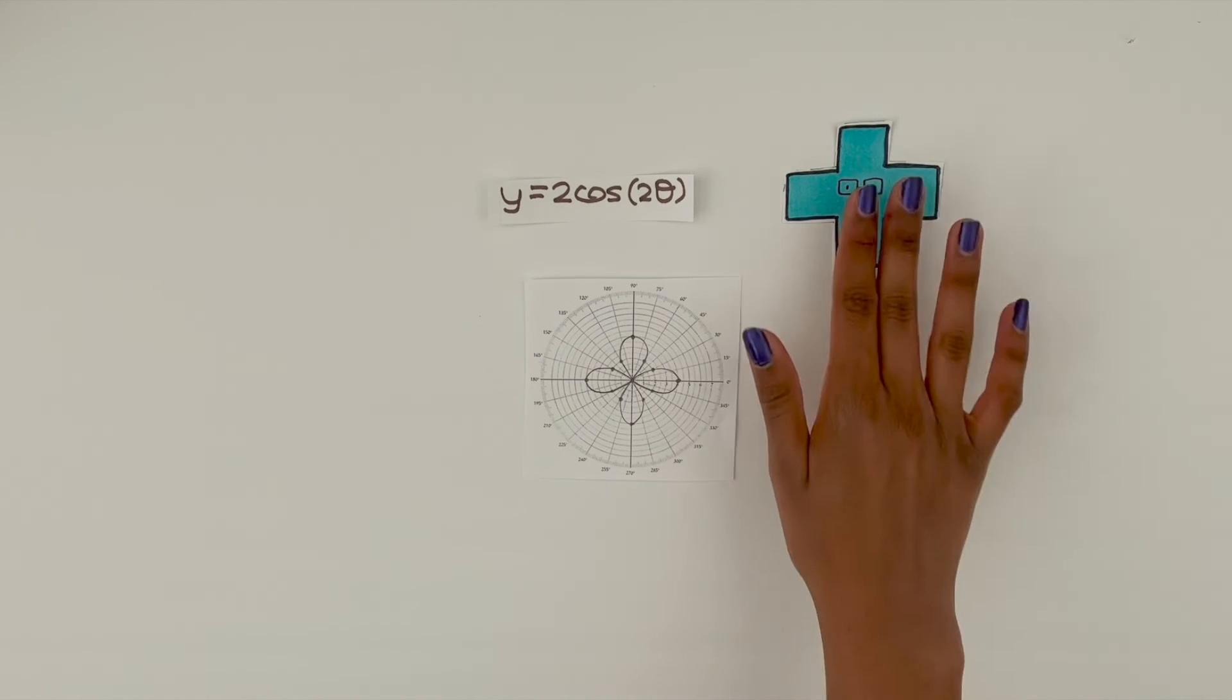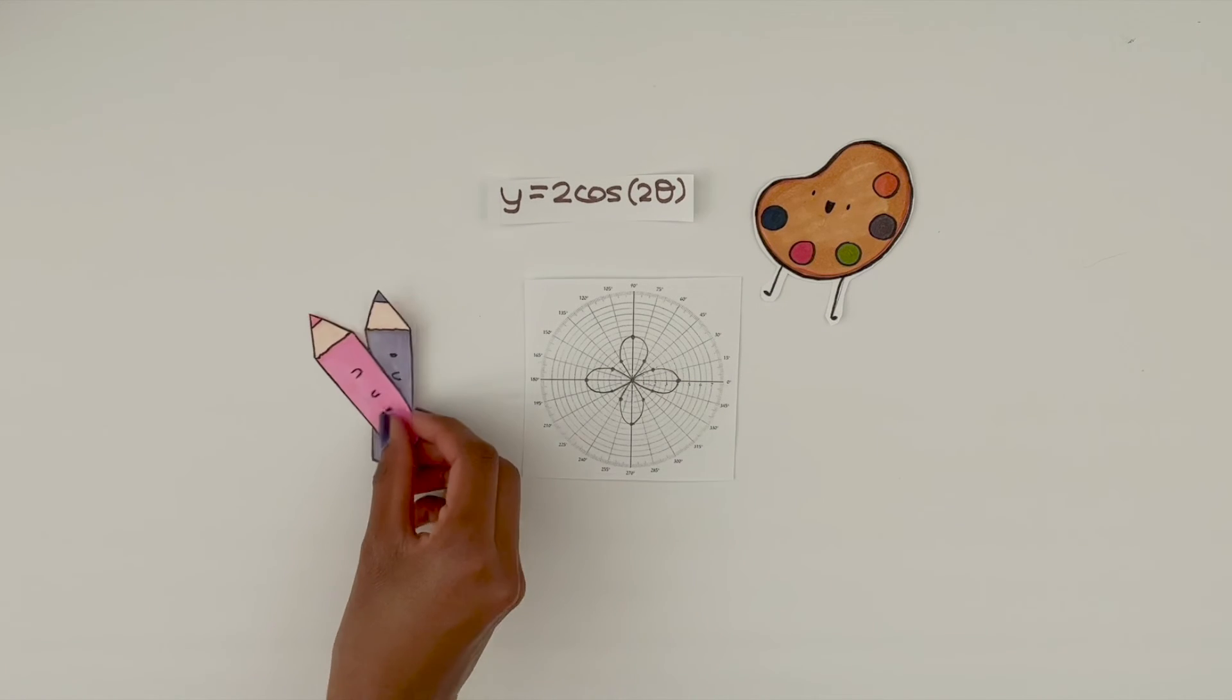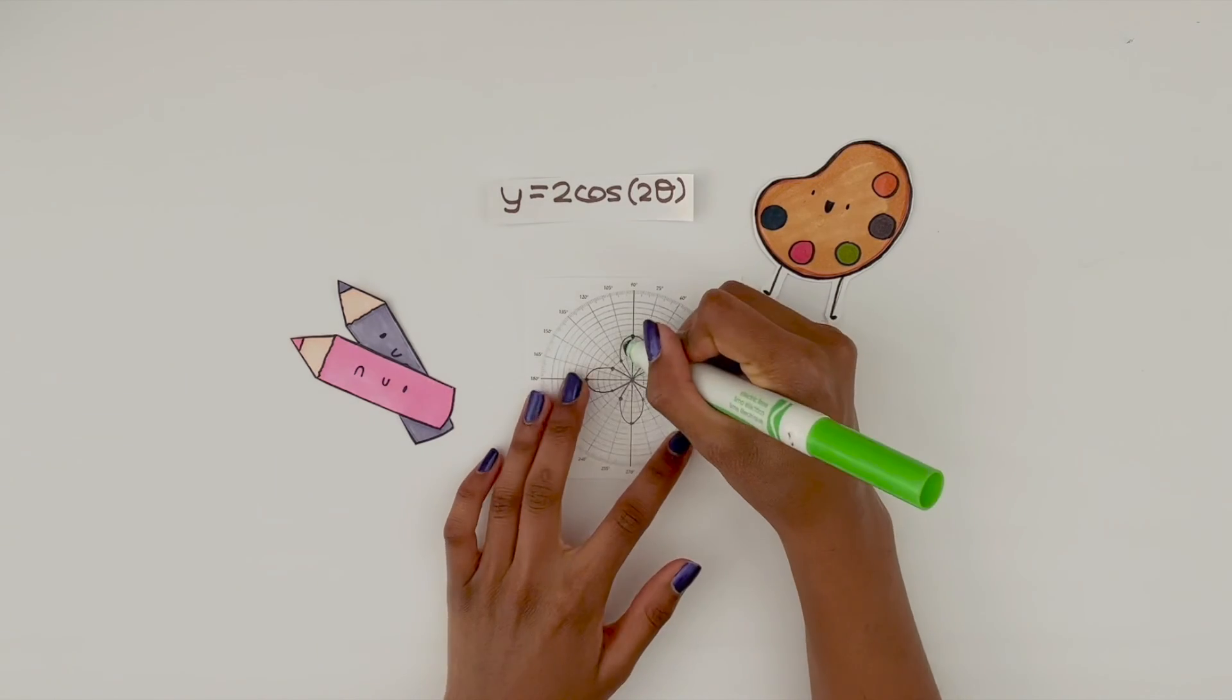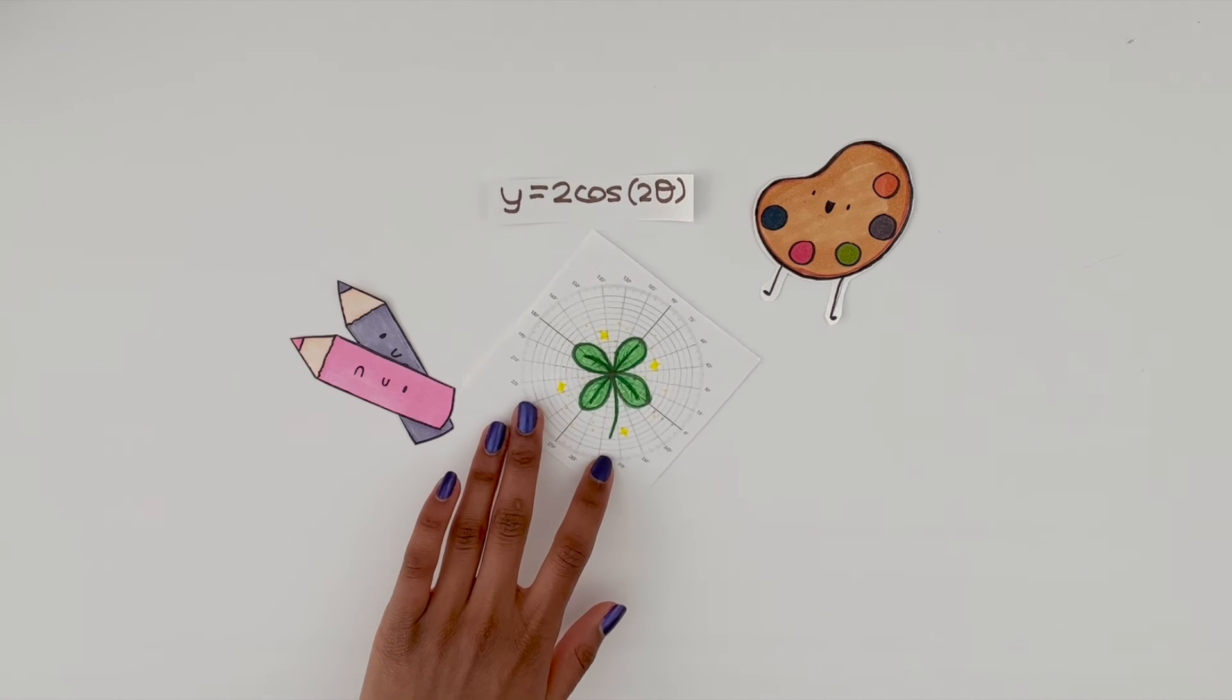And ta-da! You should have a similar shape to mine. Let's use our colored markers to make this graph into something else. I decided to make mine into a 4-leaf clover.